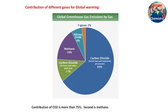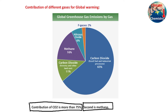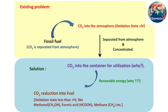If you look at the contribution of greenhouse gases to global warming, carbon dioxide contributes more than 75%. In second position is methane — I have already discussed a dedicated lecture on methane clathrates, which is a potential fossil fuel. From this we understand that carbon dioxide is the main culprit. The existing problem is that fossil fuel is burned in the presence of atmospheric oxygen to produce carbon dioxide and energy, and that carbon dioxide is thrown into the atmosphere.